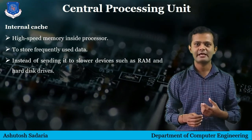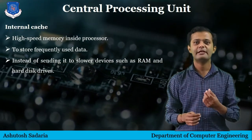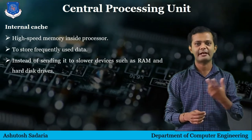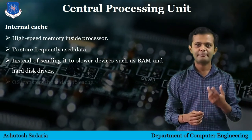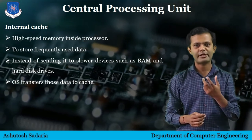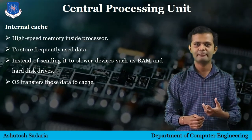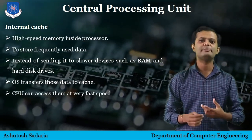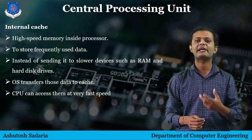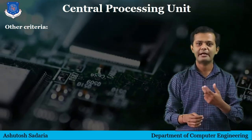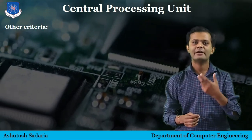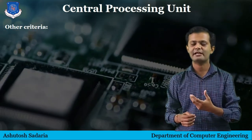Cache memory is faster than RAM and hard disk in relative terms. Parts of data are transferred from disk to cache memory by the operating system, from where the CPU can access them at very fast speed compared to regular storage mediums. Cache memory is faster than RAM, and RAM is faster than hard disk.